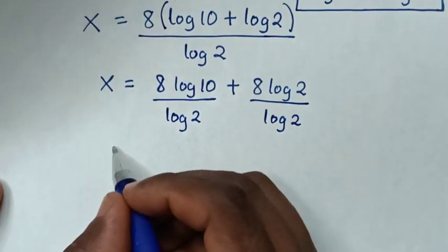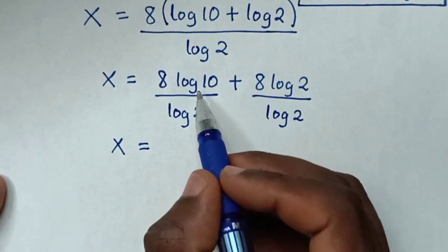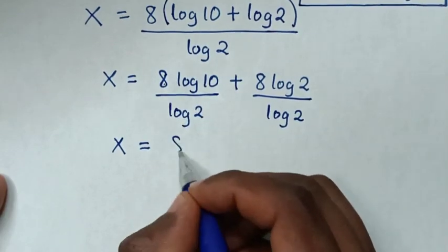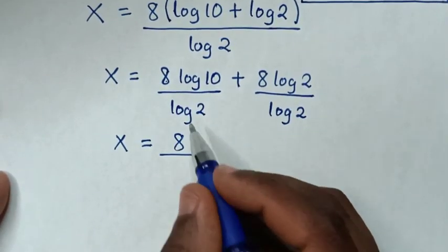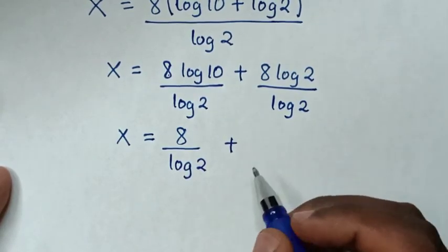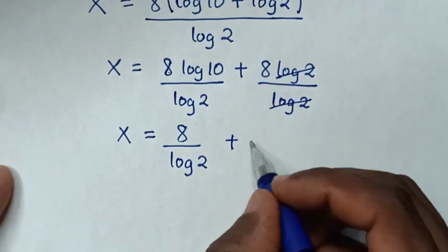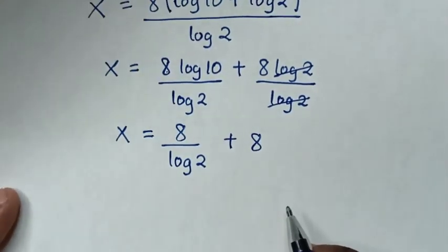Then it will be x is equal to, from here log of 10 is same as 1, so 1 times 8 is 8, then over log of 2. Plus, this log of 2 will cancel with this log of 2, so it will be plus 8. Then in the next step,